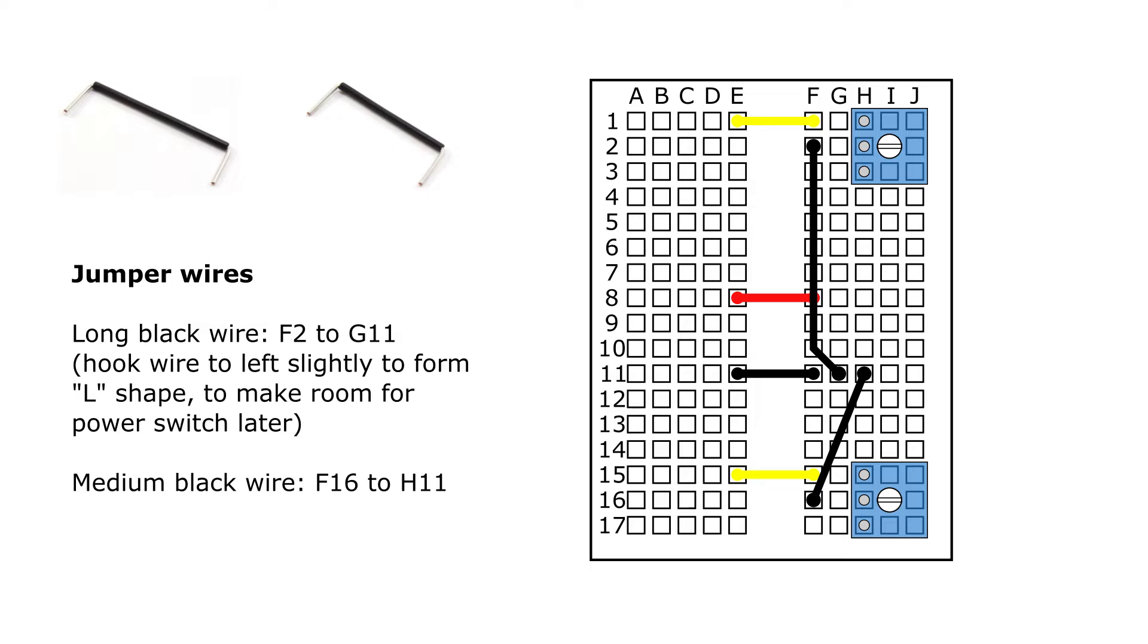Next, you're going to take two black jumper wires, a long black one, and connect that from F2 to G11. And you're going to want to hook that one a little bit to the left in sort of an L shape to make room for another part in the next step. And then you're going to take a medium black jumper wire and go from F16 to H11.